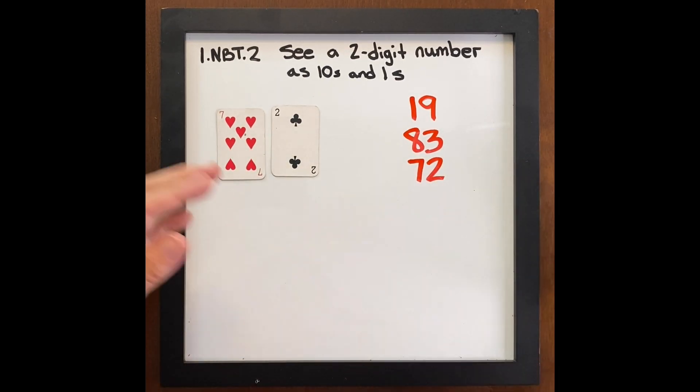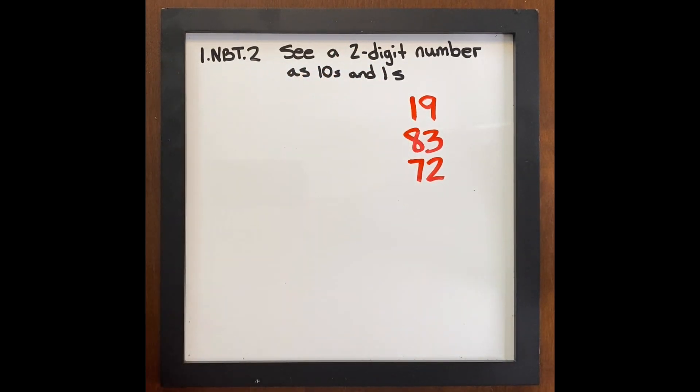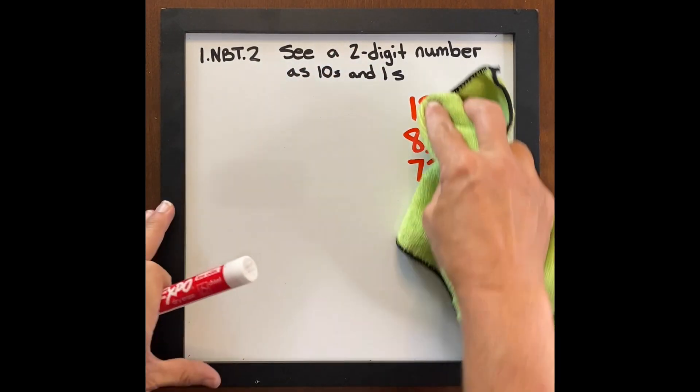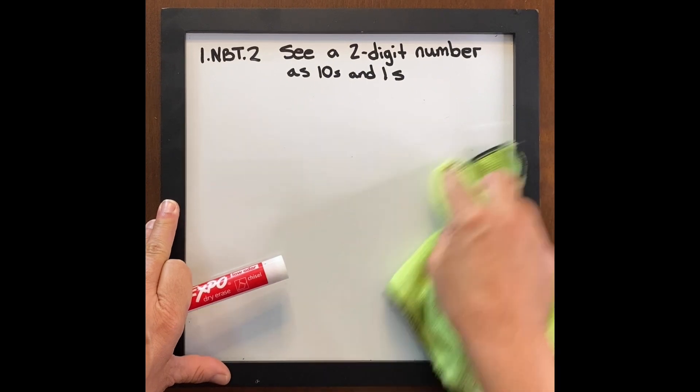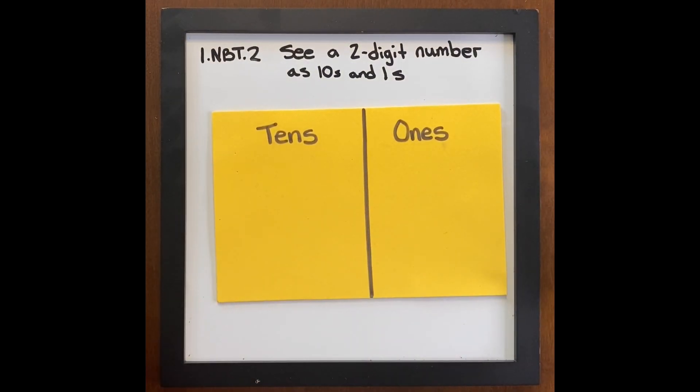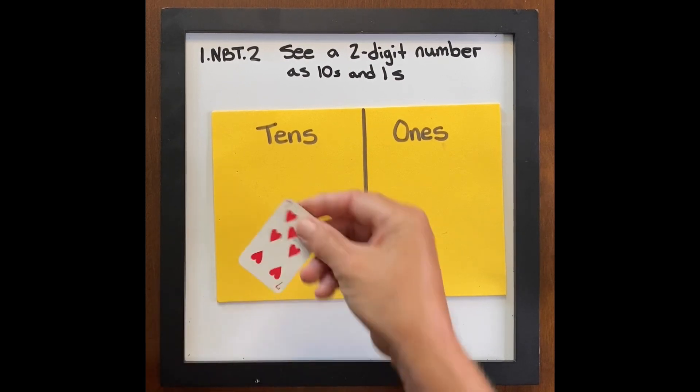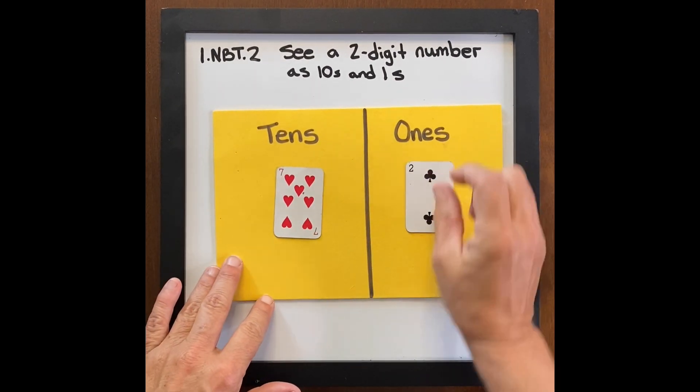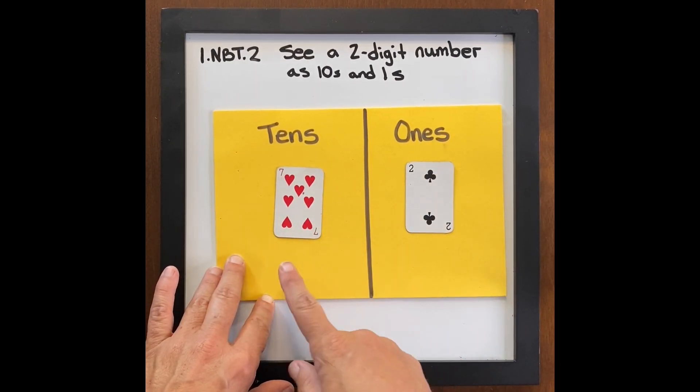Because the students are constantly using that language, tens and ones, this is going to grow into using a foam mat which says tens and ones. Seven tens two ones. Seven tens two ones is 72.